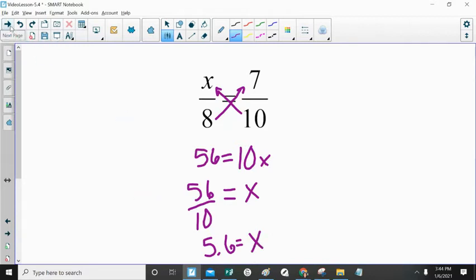Cross-products property will always work in figuring out what your missing piece of your proportion is.